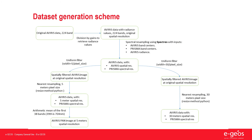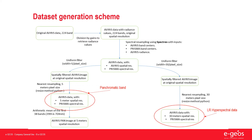Here is the dataset generation scheme. From the original AVIRIS data, which has 224 bands, through a series of spectral and spatial resampling, we obtain the panchromatic band, the low resolution hyperspectral data, and the higher resolution hyperspectral data.